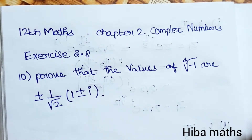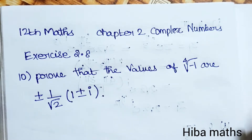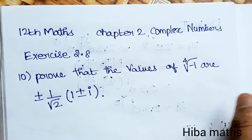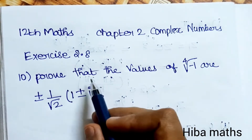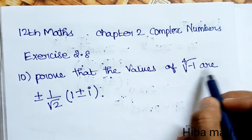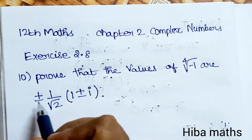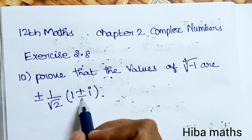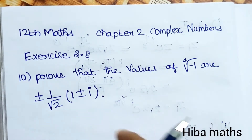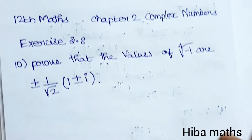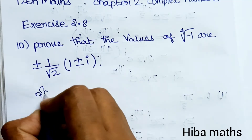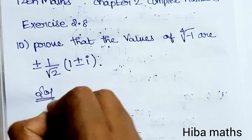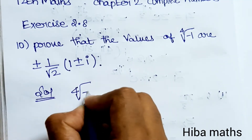Hello students, welcome to Hibamax 12th standard, Chapter 2: Complex Numbers. We are doing the 10th question — prove that the 4th root of minus 1 has values plus or minus (1/√2)(1 ± i). This proof is very easy to understand.